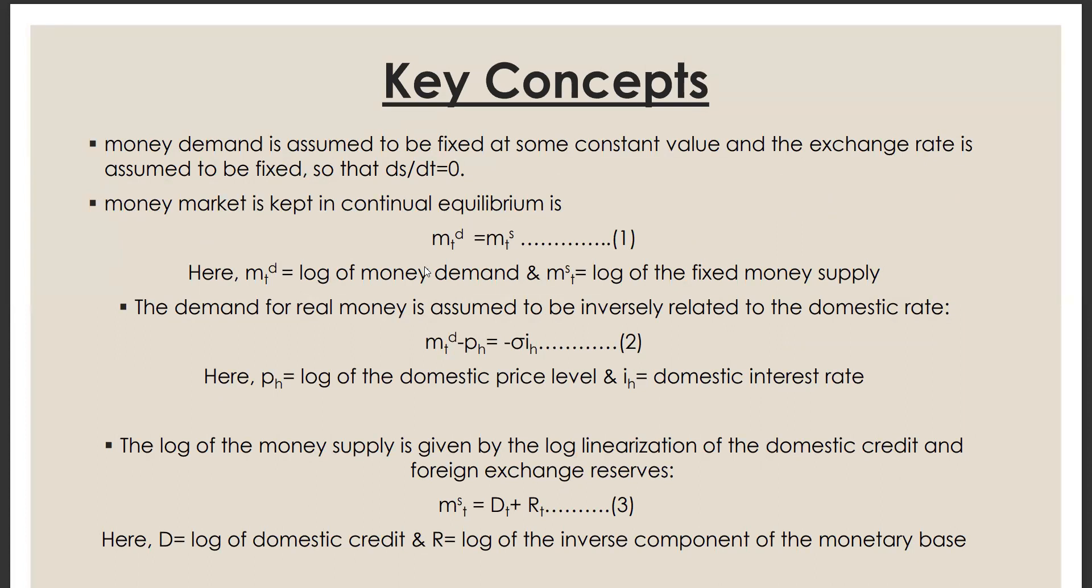Here we are in the position of explaining the first generation currency crisis model in more detail. Here we have assumed that money demand is assumed to be fixed and at some constant value as well as the exchange rate. Money market is in continual equilibrium, meaning that money demand and money supply is equal, which is indicated by equation one. Here MTD is the log of money demand and MTS is the log of the fixed money supply. Here we also assume that real money supply is inversely related to the domestic interest rate, which is indicated by equation two. Here pH is the log of the domestic price level and IH is the domestic interest rate.